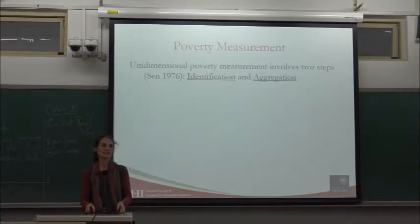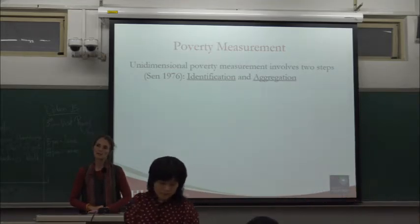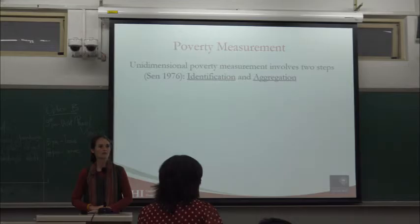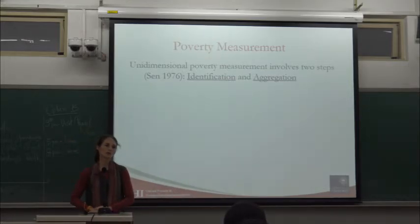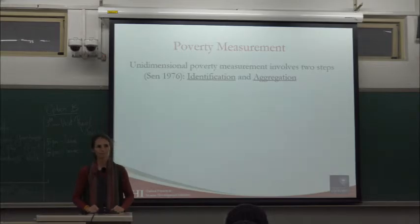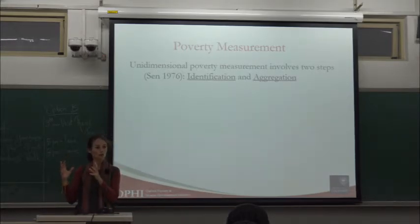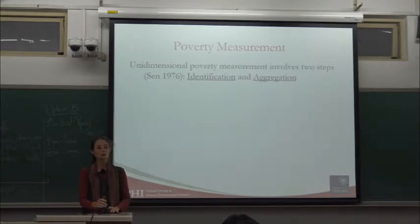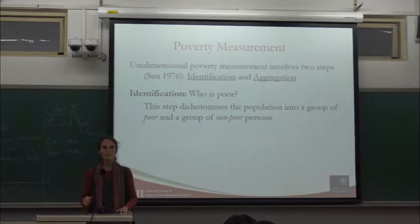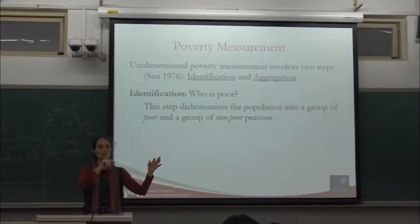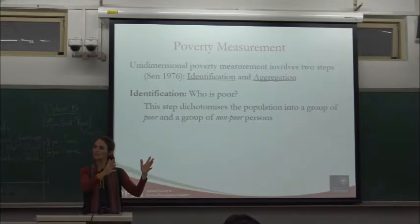Amartya Sen's 1976 paper, 'An Ordinal Approach to Measurement of Poverty,' said that measurement of poverty requires identifying a space in which poverty should be measured, and then has two steps: one is identifying who is poor, and the second is aggregating information on poor people into a society-wide measure. Identification means that for everybody we say you are poor or you are not — we'll have a definitive set of poor people with their entry numbers in the data set.